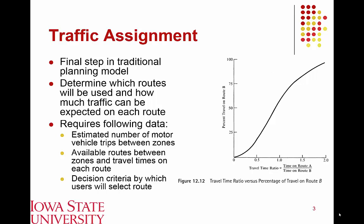If we think about this big picture, let's assume we have two perspective routes A and B between a given origin and destination. If the travel times between those routes are equal, or the ratio of travel times is equal to one, we see that 50% of travelers would choose route A and 50% would choose route B. As the travel time on route A gets relatively large compared to B, most travelers would tend to shift towards B, and vice versa as the travel time on A gets smaller relative to B.